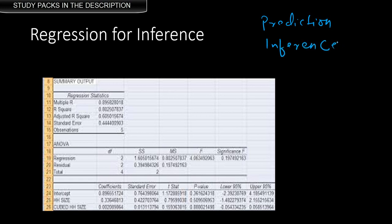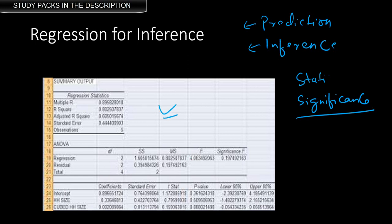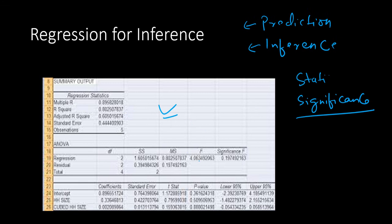In prediction models we are trying to predict the target variable or the dependent variable. While if the intention is for inference — finding out the relationship between your predictors or independent variables with the dependent variable — you come across significance tests. Here is an example of the output from a regression model where we are concerned about finding out which independent variables are significant in the model.